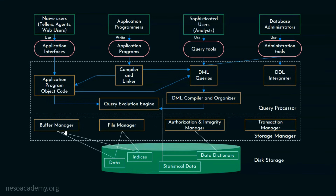The buffer manager is responsible for fetching the data from the disk storage into the main memory. Also, this buffer manager decides what data to cache in the main memory — cache memory is mainly used for faster access. This buffer manager is very crucial in terms of handling the size of the data. We know databases will be larger than our actual main memory, so the buffer manager also takes care of this memory management.